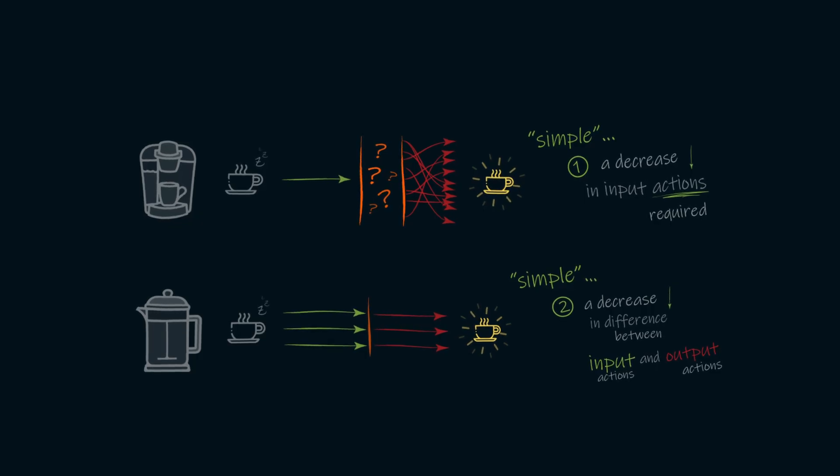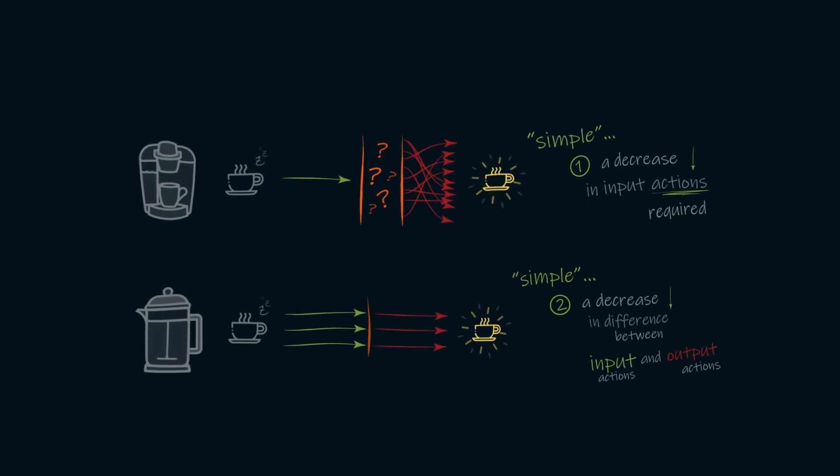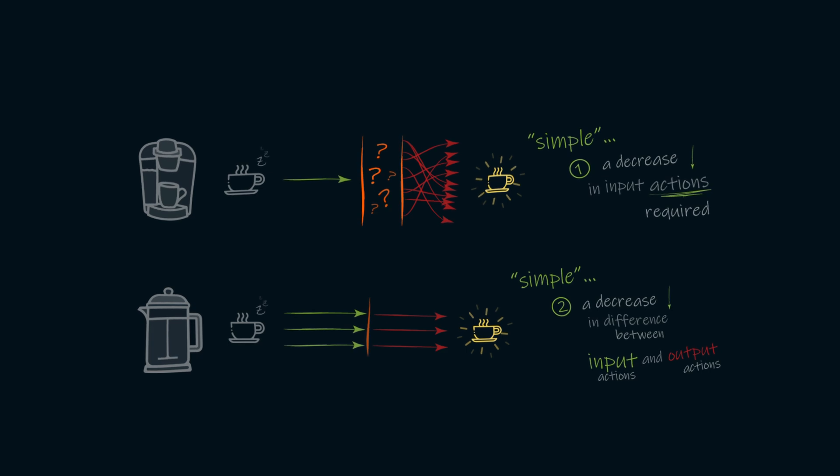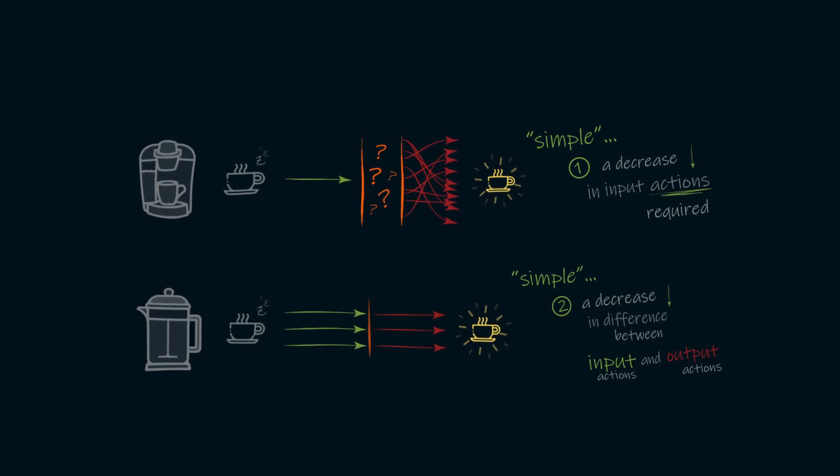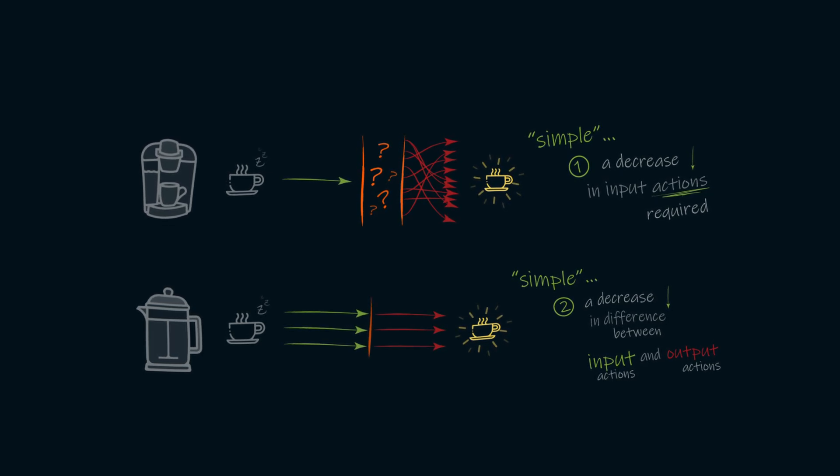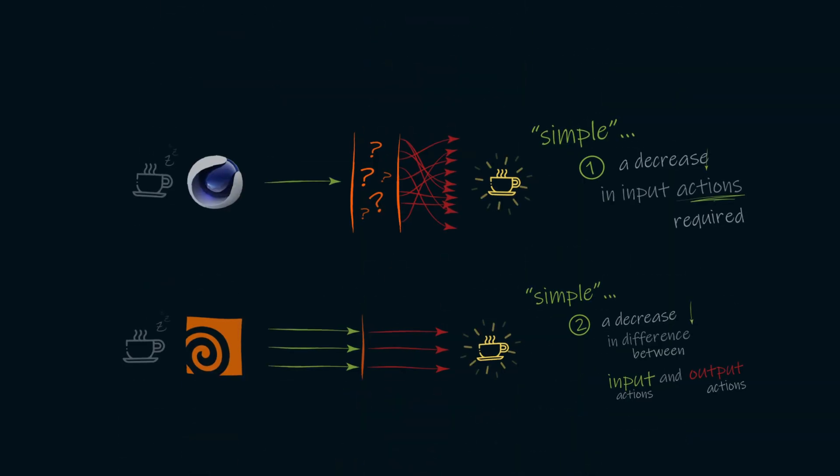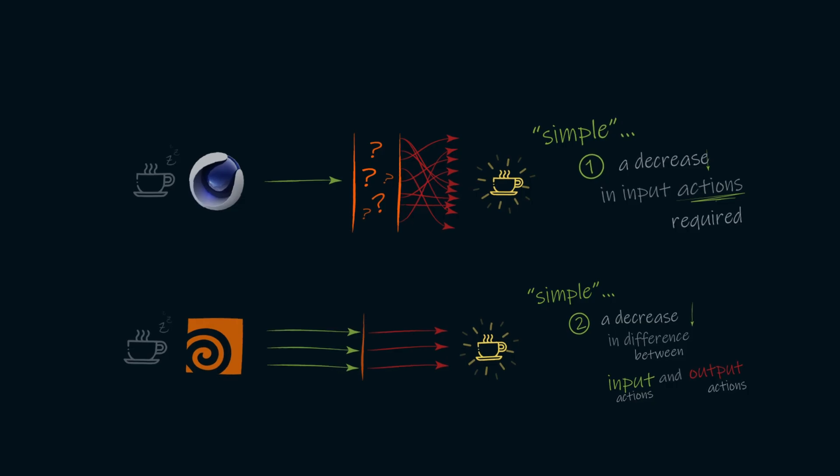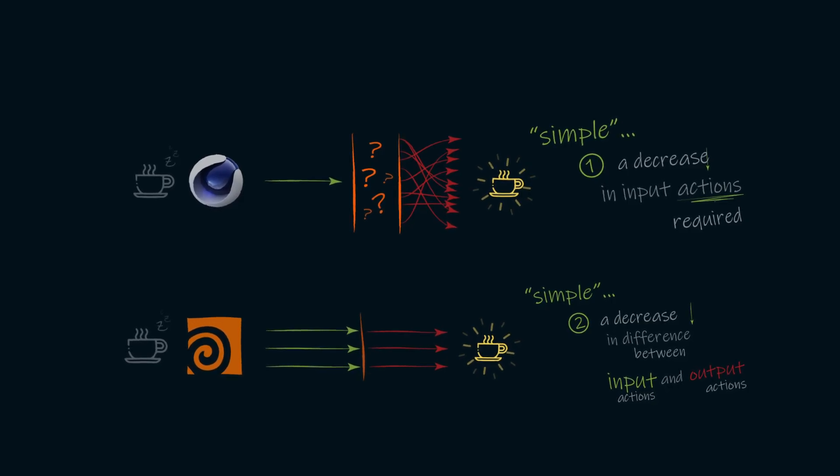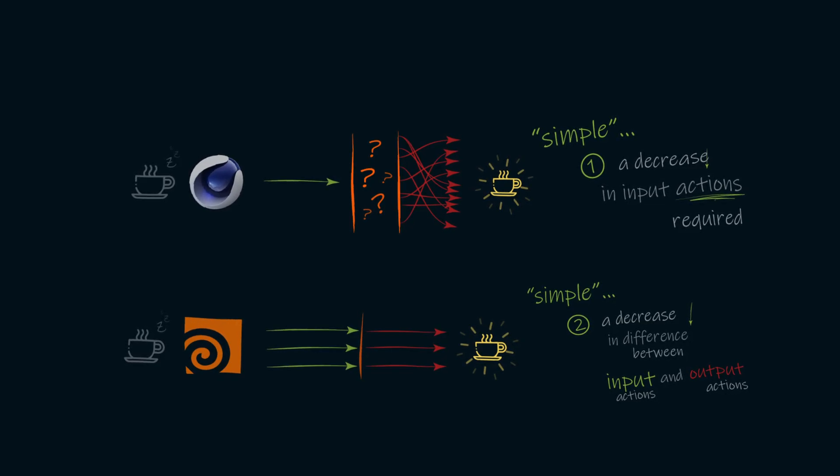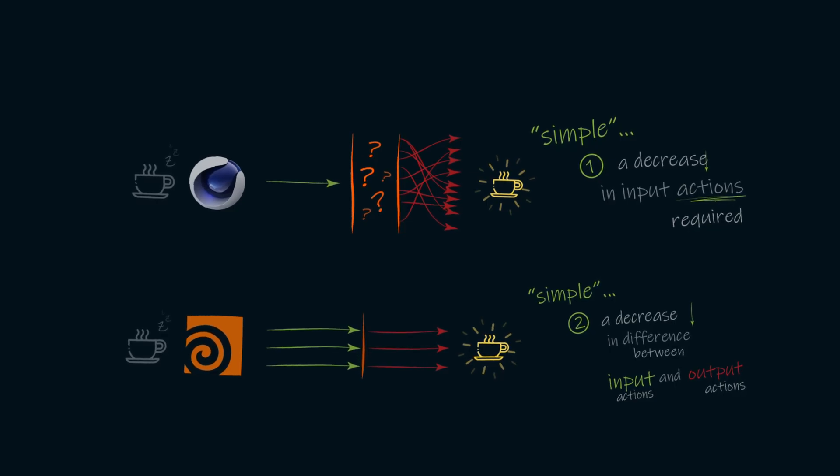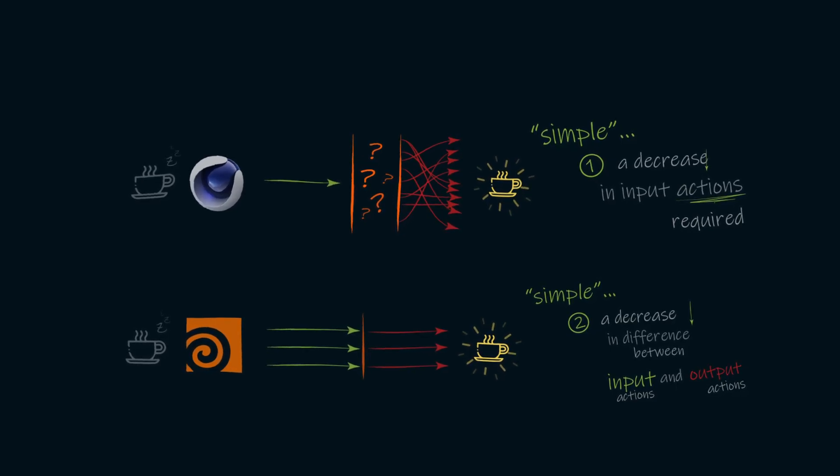And if our coffee taste has matured enough for us to want to try to make the world's greatest cup of coffee, we'd also have to decide which way we'd rather try and make that cup of coffee. And this idea here is the exact same way as to how Cinema 4D compares to Houdini. They both are simple, but we just have two different types of simplicity.